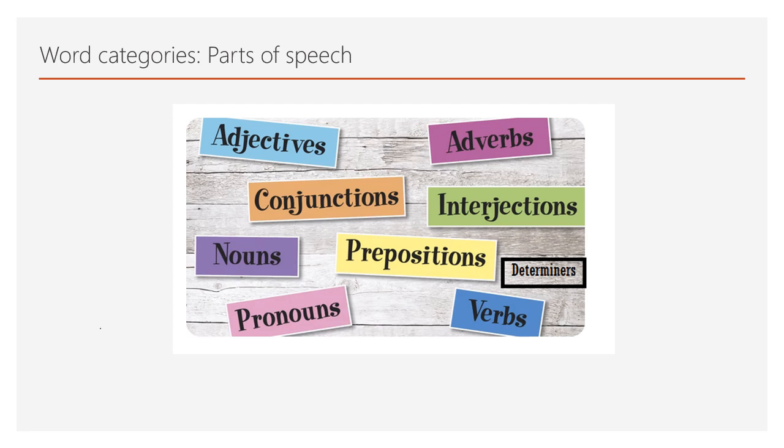In English, there are commonly nine types of parts of speech. They are nouns, verbs, adjectives, adverbs, conjunctions, interjections, pronouns, prepositions, and determiners.